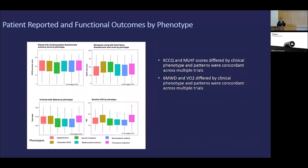Next, we looked at patient-reported and functional outcomes by phenotypes. We used the KCCQ and Minnesota Living with Heart Failure questionnaires from the trial data — a lower KCCQ score indicates poor self-perceived health status, while a higher Minnesota Living score indicates poor perceived health status. These phenotypes differ significantly, and the patterns were concordant across multiple clinical trials, with the insulin resistant phenotype having some of the worst patient-reported outcomes and the hypertensive phenotype having some of the best. For functional outcomes — six-minute walk distance and baseline VO2 — the findings are similarly concordant across multiple trials, with insulin resistant, multi-morbid ischemic, and non-ischemic elderly phenotypes having some of the worst functional outcomes.